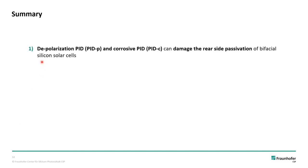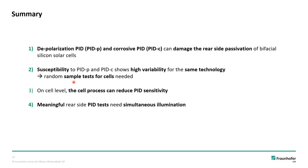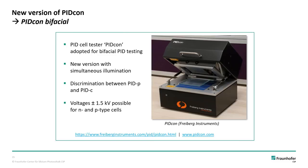To summarize: PID of the depolarization type and corrosive PID can damage the rear side passivation of silicon solar cells, and the susceptibility to PIDP and PIDC is highly variable for the same technology. We therefore recommend regular cell tests, but you also have the chance already at cell level to reduce PID sensitivity. We also recommend that meaningful PID tests at the rear side should include simultaneous illumination. To realize these new PID tests, Freiberg Instruments has upgraded their PIDcon to a PIDcon bifacial. The new device contains simultaneous illumination, allows automatic discrimination between PIDP and PIDC, and is able to switch voltages between high negative and high positive, which is useful for both N-type and P-type solar cells.